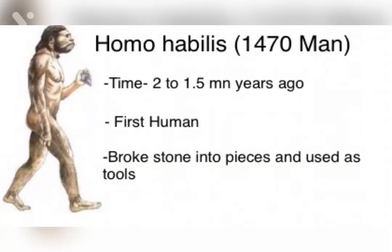Now let's have a look at the third stage, that is Homo habilis. The time period in which they lived was from 2 to 1.5 million years ago. They are known as the first humans, that is they resembled more characteristics of humans than apes. And they were the first to chip stones into pieces and use them as tools.